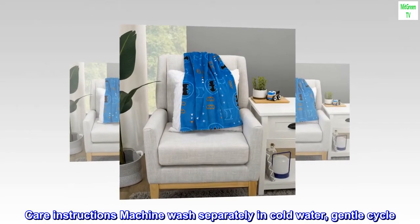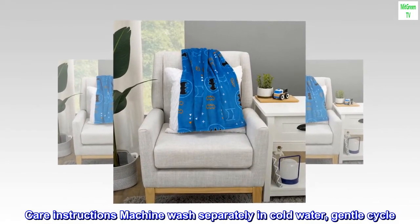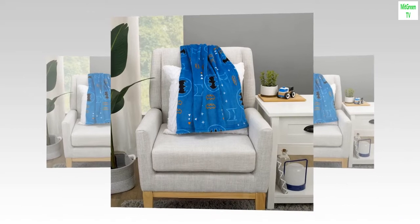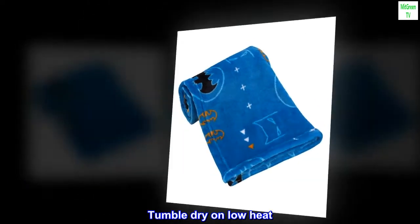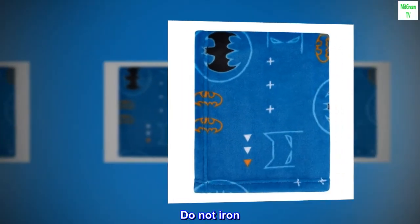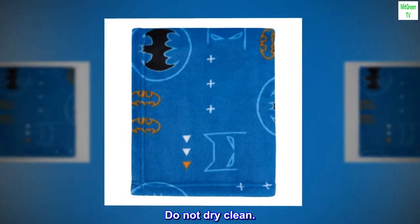Care instructions: machine wash separately in cold water, gentle cycle. Use only non-chlorine bleach when needed. Tumble dry on low heat. Do not iron. Do not dry clean.